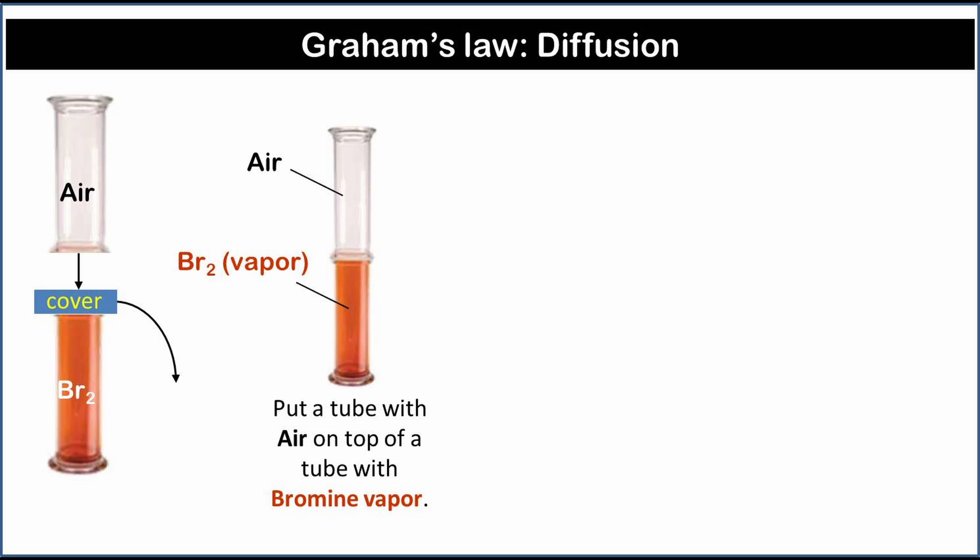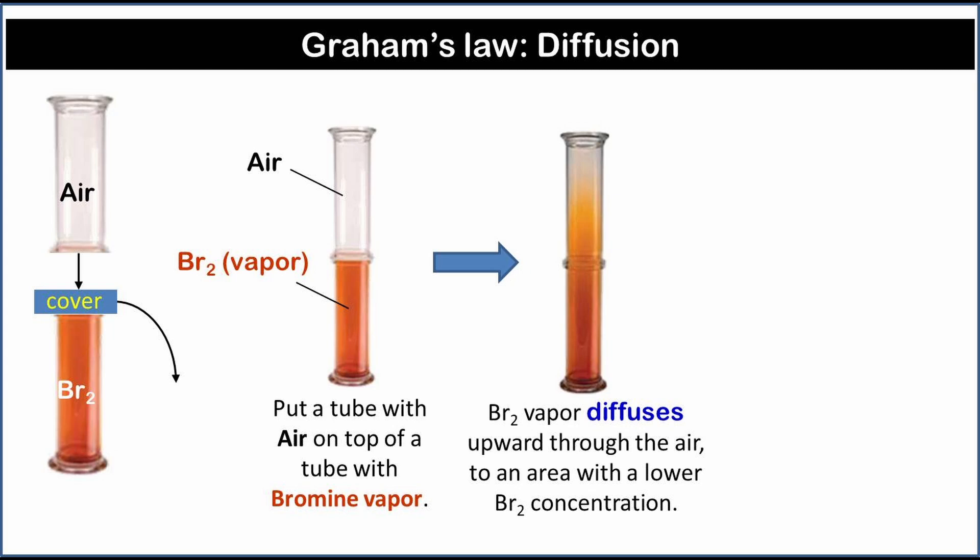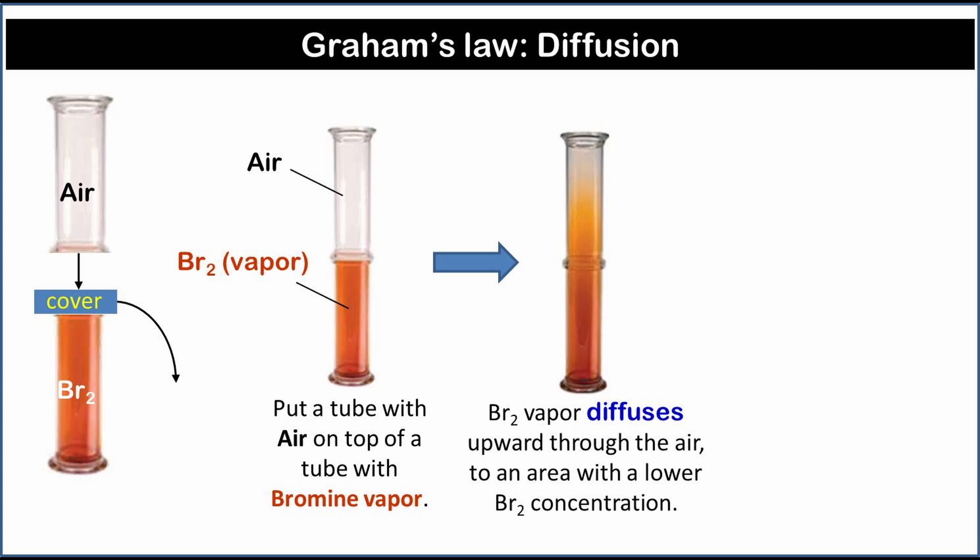In the last part of this video, we will discuss Graham's law of diffusion and effusion. Remove the cover on top of a tube filled with bromine vapor and put a tube filled with air on top of it. The bromine vapor will diffuse upwards through the air to an area with a lower bromine concentration. This process continues until bromine vapor is spread evenly throughout. At that point in time equilibrium is reached.